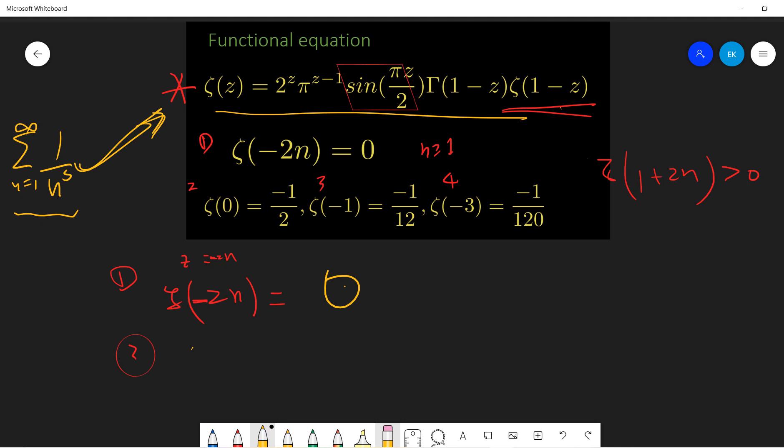So let's say ζ(0), so we just put 0. Now we get 2^0, 1 over π. So now we get 0, right? So let's assume that z approaches to 0. So we get πz/2. Because sin(x) approaches to x, as x is very small. And Γ(1-0), so you get Γ(1) and ζ(1).